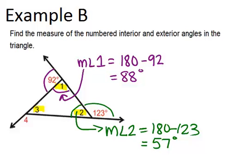So that means 88 plus 57 plus the measure of angle 3 has to equal 180. We can solve for angle 3 by subtracting 88 and 57 from 180. We end up with 35.